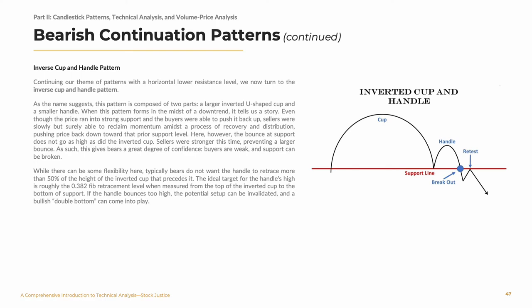Continuing our theme of patterns with a horizontal lower resistance level, we now turn to the inverse cup and handle pattern. As the name suggests, this pattern is composed of two parts: a larger inverted U-shaped cup and a smaller inverted handle. When this pattern forms in the midst of a downtrend, it tells us a story. Even though the price ran into strong support and the buyers were able to push it back up, sellers were slowly but surely able to reclaim momentum amidst a process of recovery and distribution, pushing price back down toward that prior support level. Here, however, the bounce at support does not go as high as did the inverted cup — sellers were stronger this time, preventing a larger bounce. As such, this gives bears a degree of confidence.